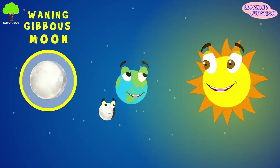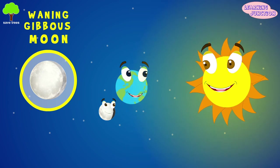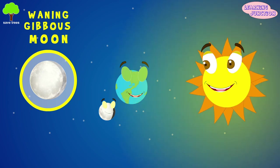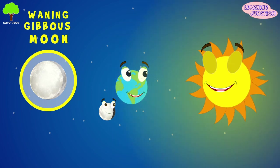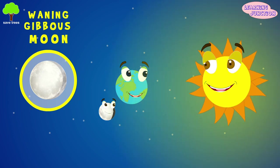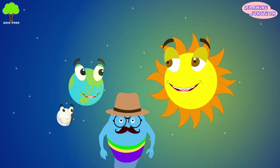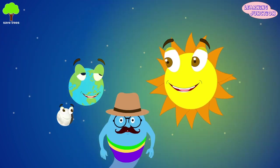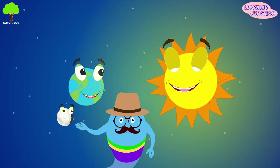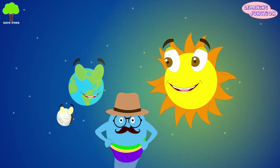Waning gibbous moon. A gibbous moon is a very shimmering moon. A waning gibbous moon rises in the east well after sunset, passing due south in the early dawn hours, and setting in the west sometime after dawn.